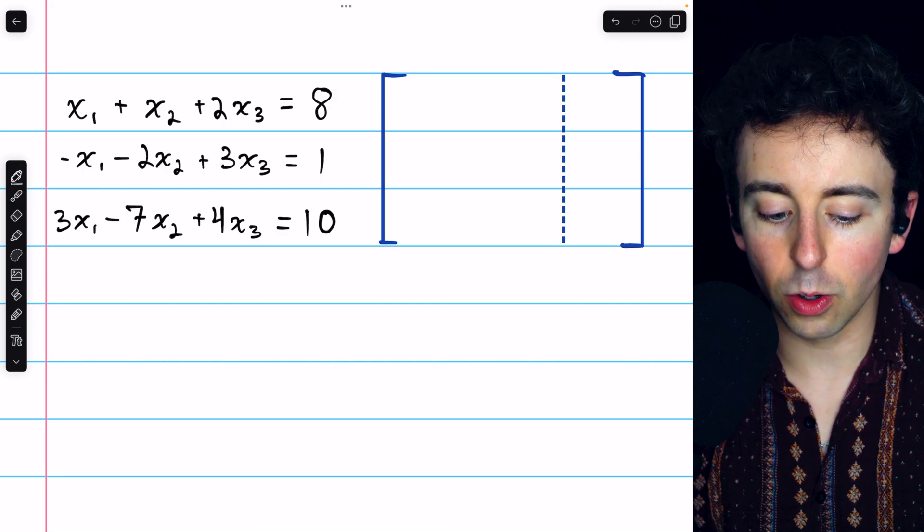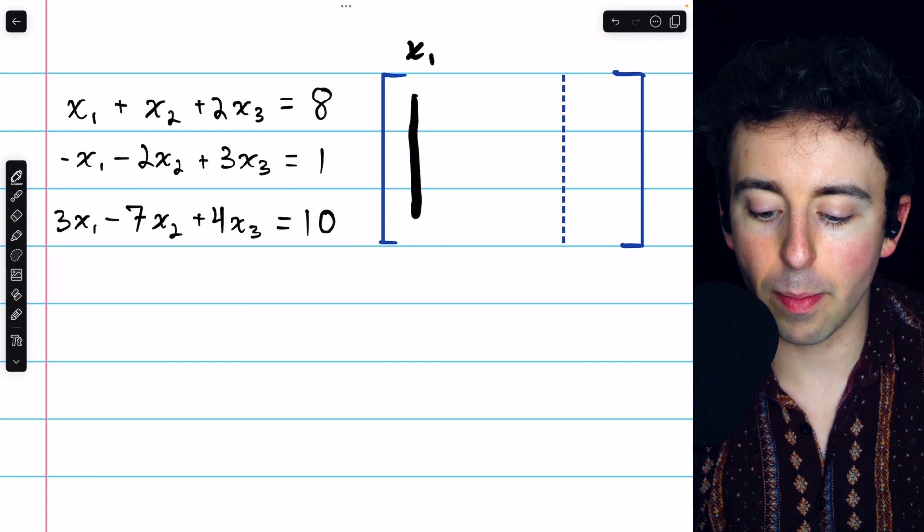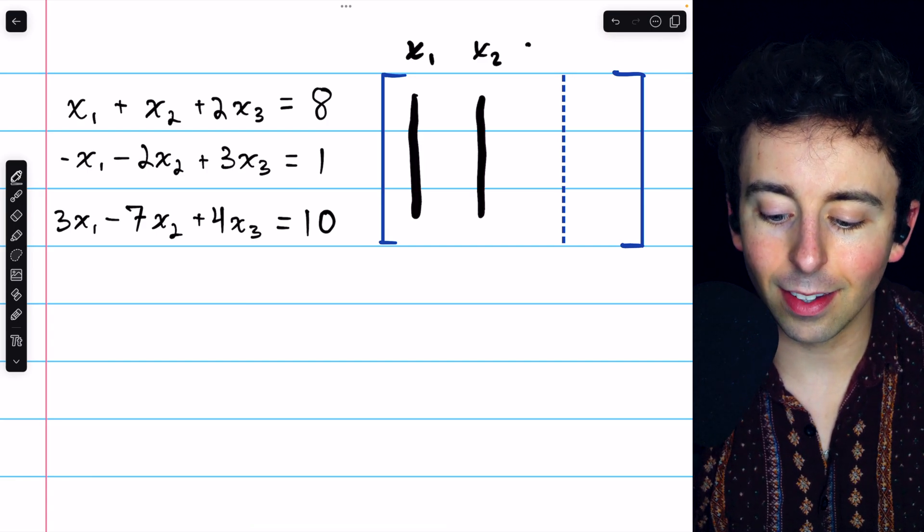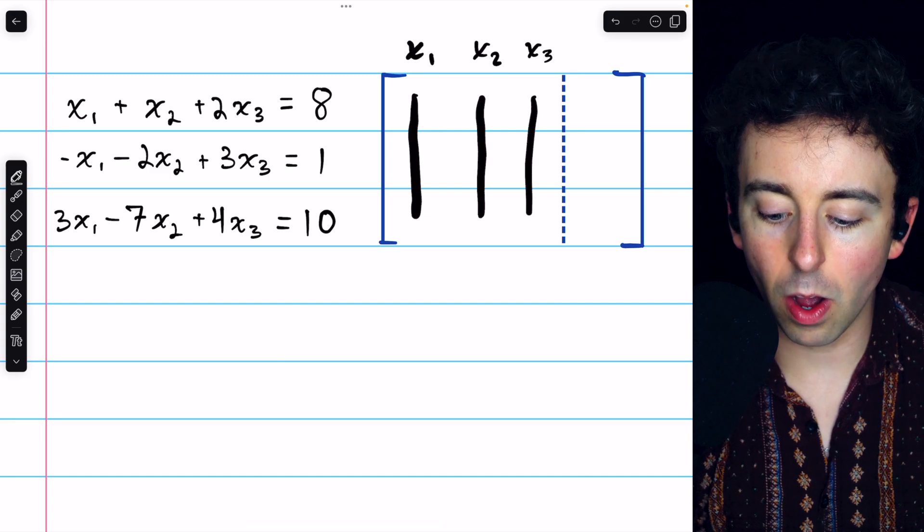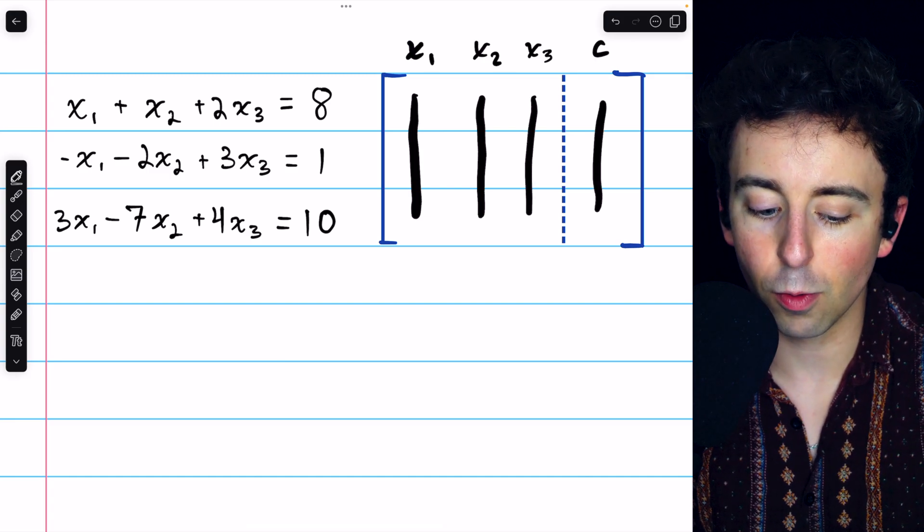What we're going to do is store the coefficients of the first variable in the first column of the matrix. We'll store the coefficients of the second variable in the second column, and so on. We also put the constants in a column on the right.